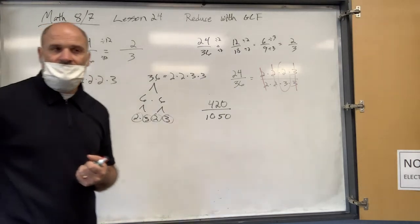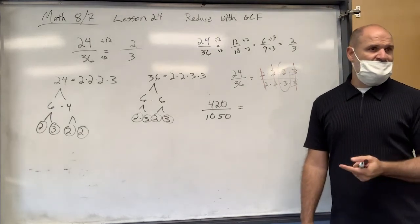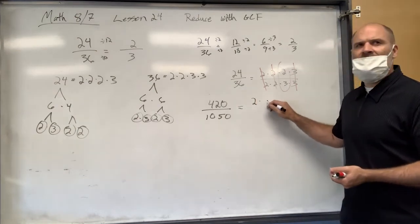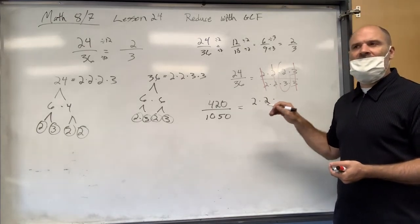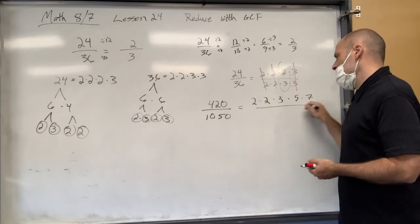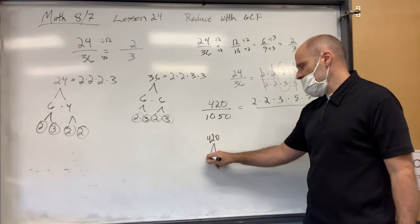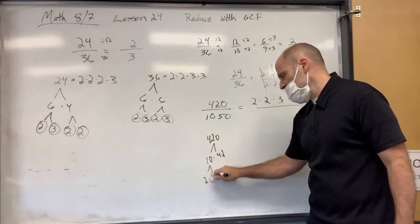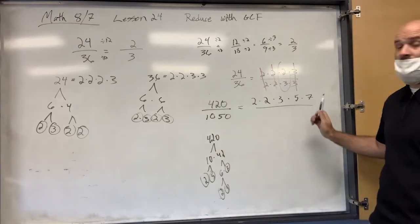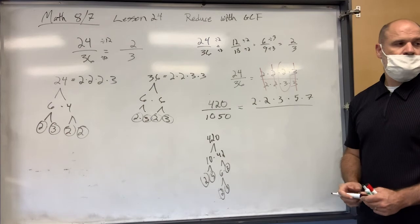Or we could do prime factorization. If I multiplied by two it'd be 2×210. So 420 is 2×210, and 210 is 2×105, and 105 is 3×35, and 35 is 5×7. So 420 factors as 2×2×3×5×7. You could also start with 10×42 — 10 is 2×5, and 42 is 6×7, so 6 is 2×3, giving the same result.